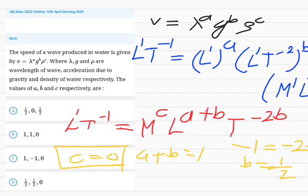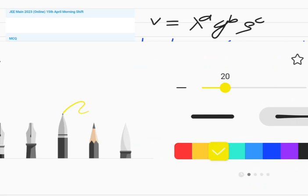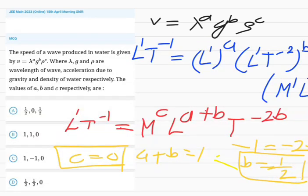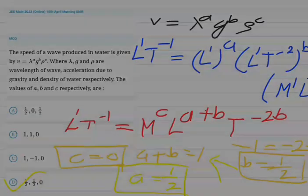So B will be 1 by 2. Use this value of B here, so A will also be 1 by 2. So A is half, B is half, and C is 0. So option D will be the right answer for this.